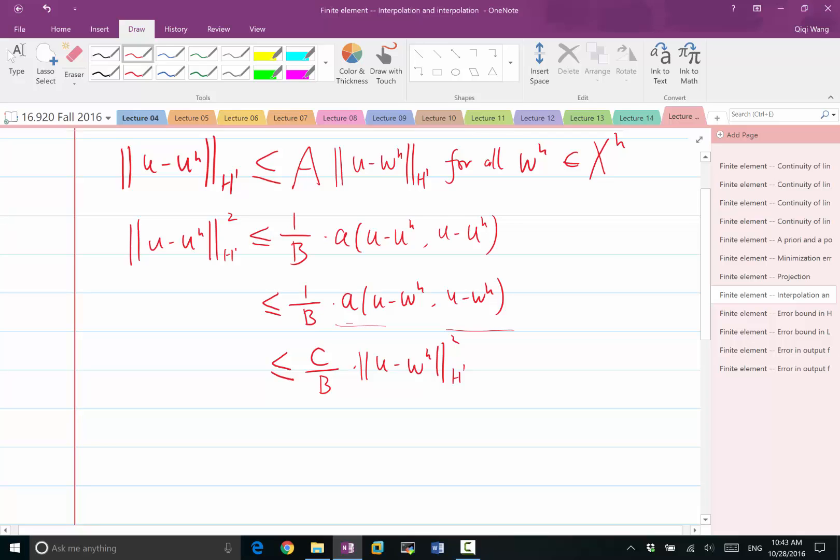So the error in H1 norm is not exactly minimized, but it is close to minimum in a certain sense. It is close to minimum in that the error is not going to be greater than a certain finite constant times the minimum error you can achieve. So because this can be for any WH, the same inequality also is true for the WH that minimizes the norm. So it is less than this times the infimum or the minimum of WH in XH, U minus WH.